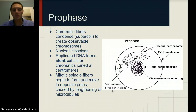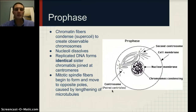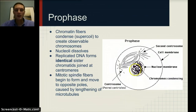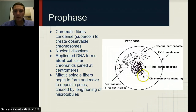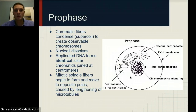In prophase, chromatin fibers condense to create observable chromosomes — this is the first phase where we can actually see chromosomes. The nucleolus dissolves, and the nuclear membrane begins to dissolve. The replicated DNA forms identical sister chromatids joined at the centromere, so chromosomes pair up and are joined at the centromere.